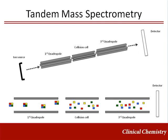Tandem mass spectrometry is a method to further enhance the specificity of mass spectrometry. Ions passed through the first quadrupole collide with inert gas in the collision cell producing fragments, and the fragments pass through the third quadrupole to the detector. Although several compounds may share the same molecular weight, and therefore the same precursor ion, they can readily be distinguished using tandem mass spectrometry if unique product ions are produced in the collision cell.